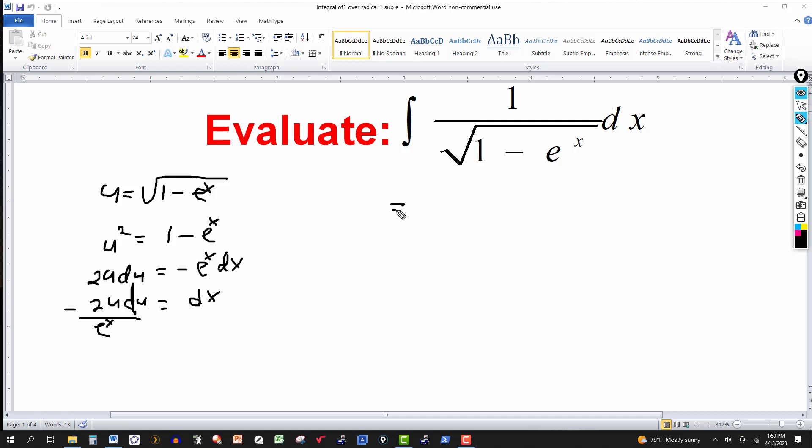Try to rewrite this as an expression in terms of u instead of x. So this will be the integral. Let's replace the dx by this expression here. So I'll put minus 2u du. And then I'll have a factor of e to the x. The denominator is just going to be u.